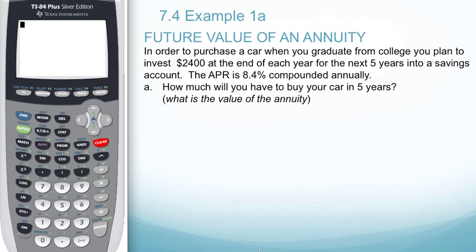In Example 1A, we will look at the future value of an annuity. In order to purchase a car when you graduate from college, you plan to invest $2,400 at the end of each year for the next five years into a savings account. The APR is 8.4% compounded annually. How much will you have to buy your car in five years?